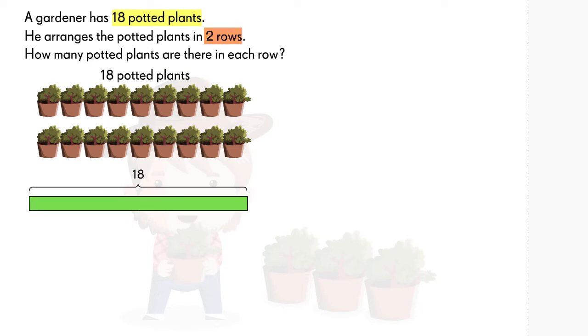The gardener arranges the potted plants equally into two rows. So, we divide the bar into two equal parts.